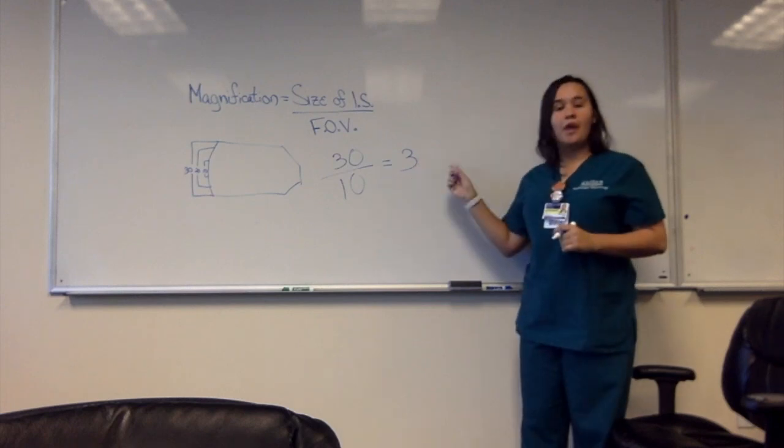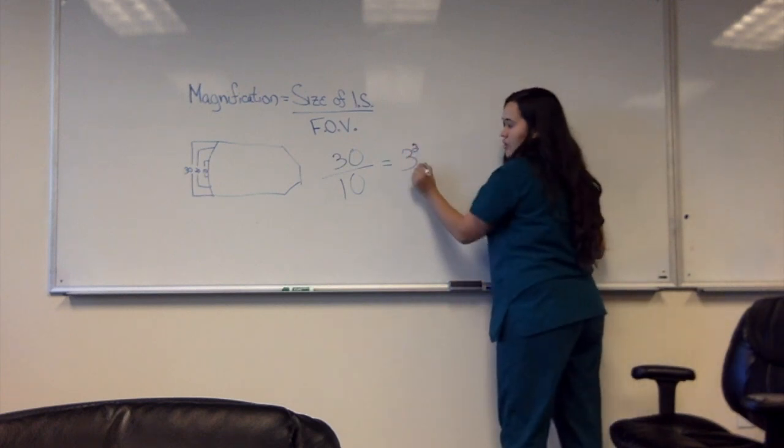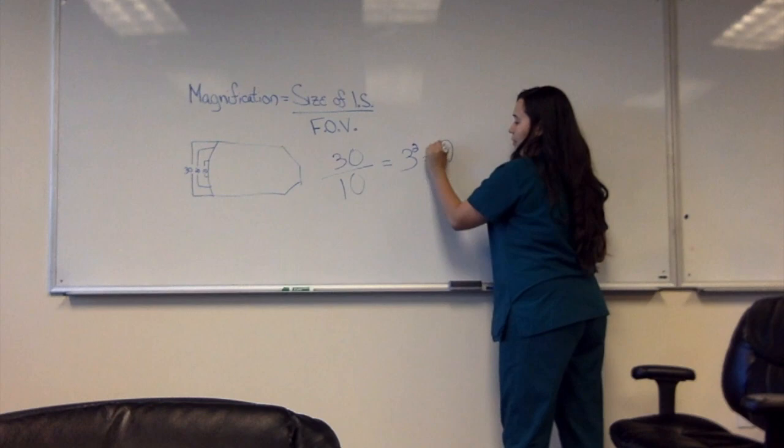Now I can also figure out the patient dose with the same number. All I need to do is square it, which would give you 9.